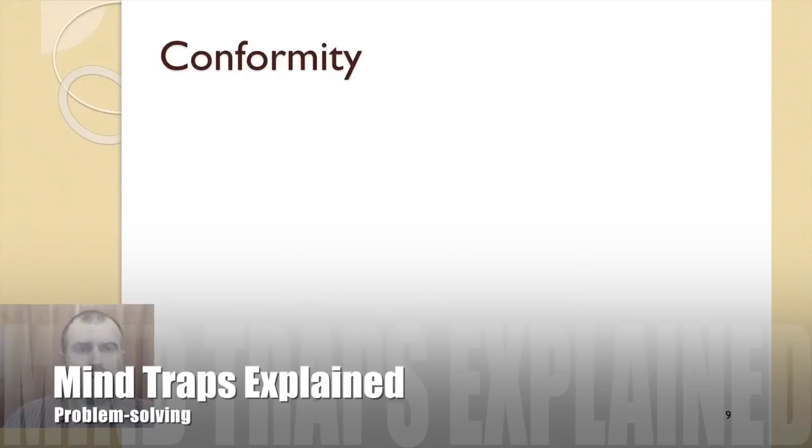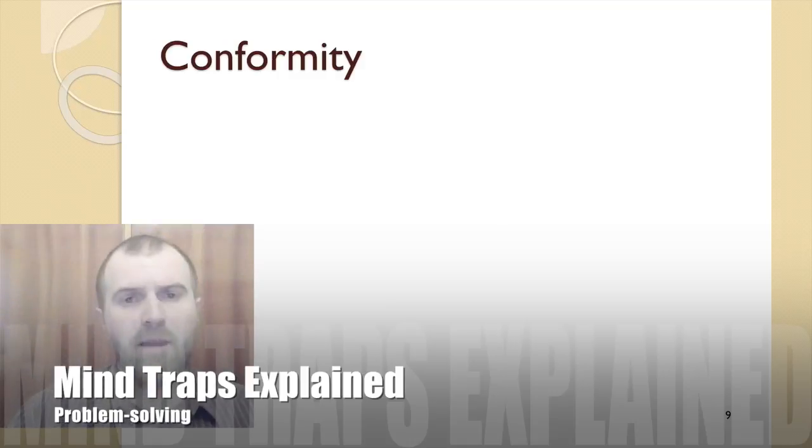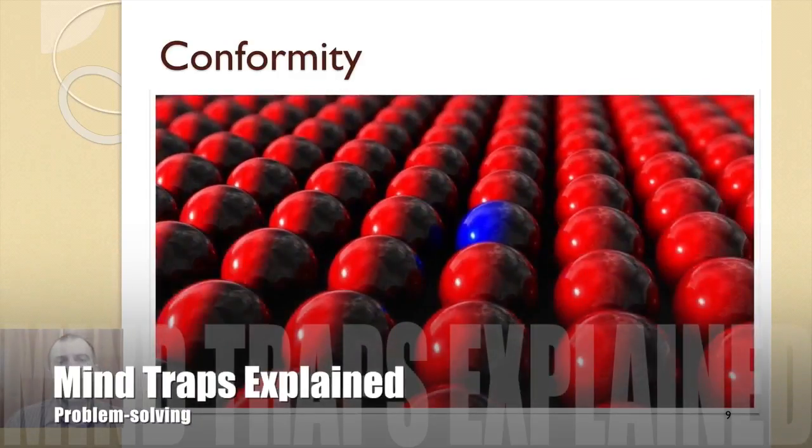Another one of the mind traps is conformity. By nature, human beings are social creatures. Whether people like it or not, the actions of others often influence them. This leads to another type of mind trap, that is the conformity we just introduced. Conformity, or groupthink, can lead problem solvers to accept the consensus of a group instead of being critical in assessing a problem and its possible solutions.